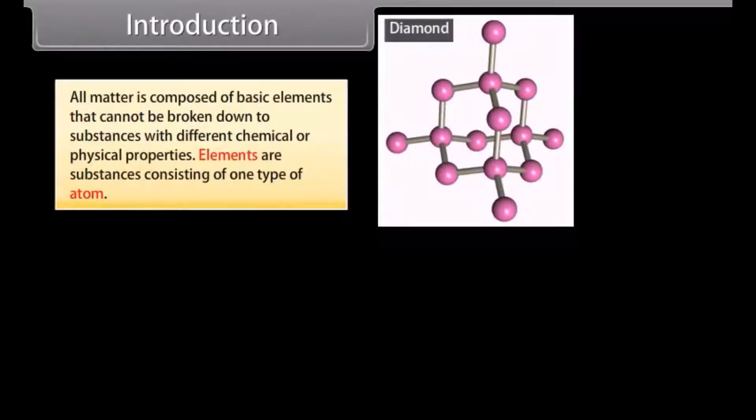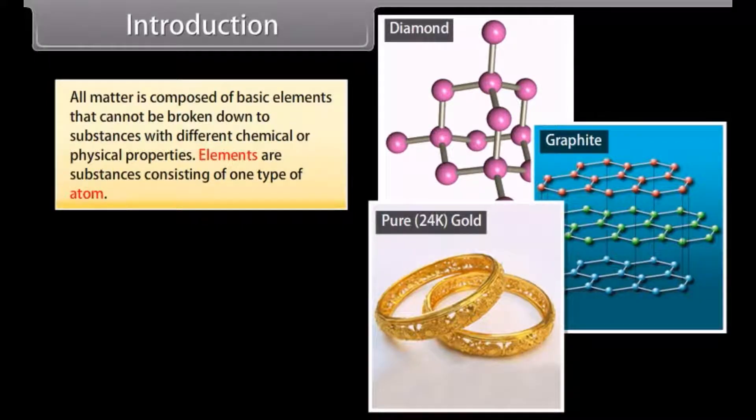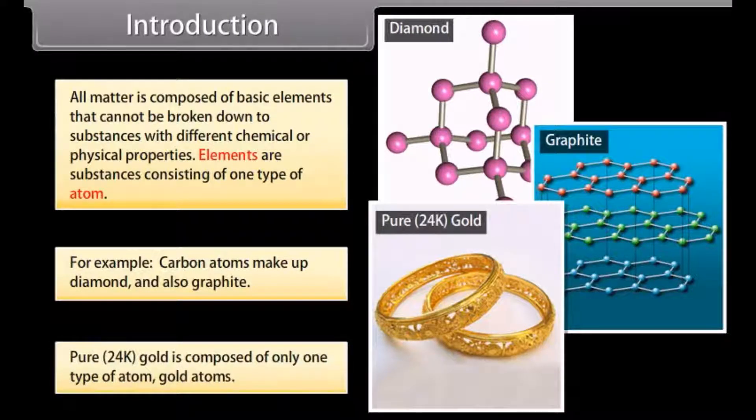Introduction. All matter is composed of basic elements that cannot be broken down to substances with different chemical or physical properties. Elements are substances consisting of one type of atom. For example, carbon atoms make up diamond and also graphite. Pure 24 karat gold is composed of only one type of atom, gold atoms.